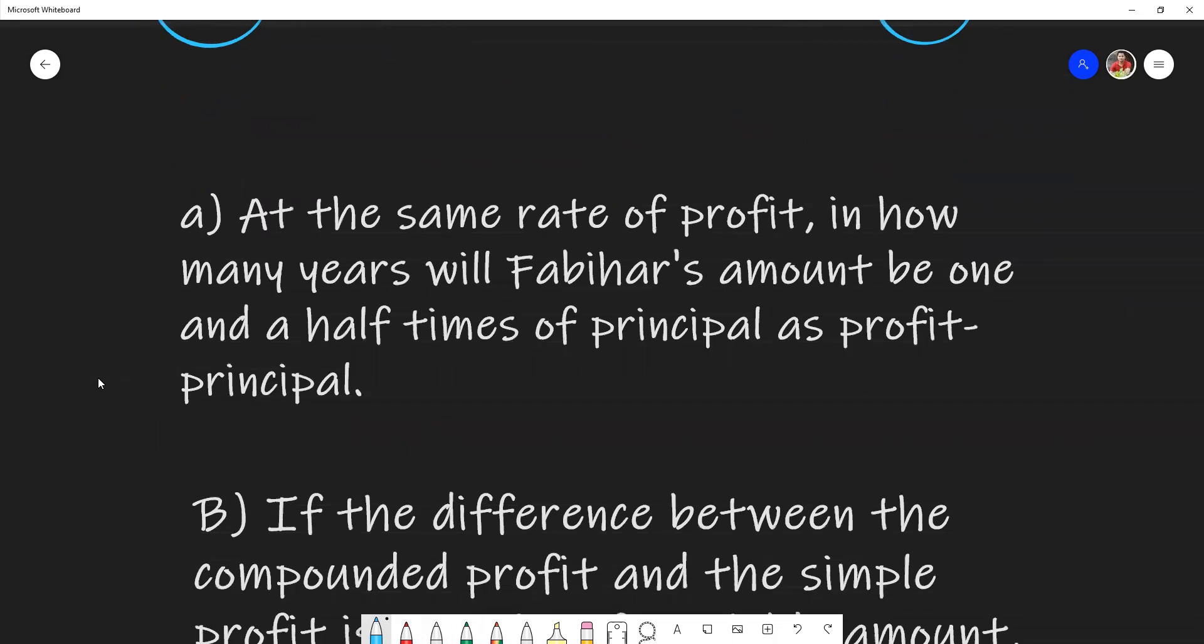There are total three questions. Question A: At the same rate of profit, in how many years will Fabiha's amount be one and a half times of the principal as profit principal?